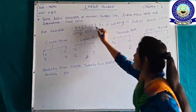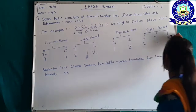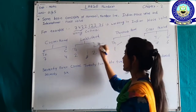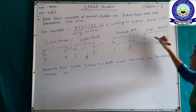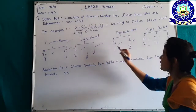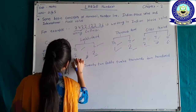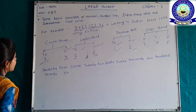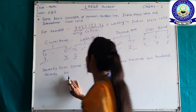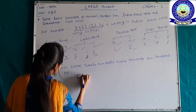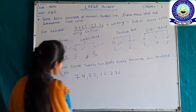Let's work through an example: the number 742,212,276. In the Indian place value chart: 6 for ones, 7 for tens, 2 for hundreds, 2 for thousands, 1 for ten thousands, 2 for lakhs, 2 for ten lakhs, 4 for crores, 7 for ten crores. We read it as seventy-four crores, twenty-two lakhs, twelve thousand, two hundred seventy-six.